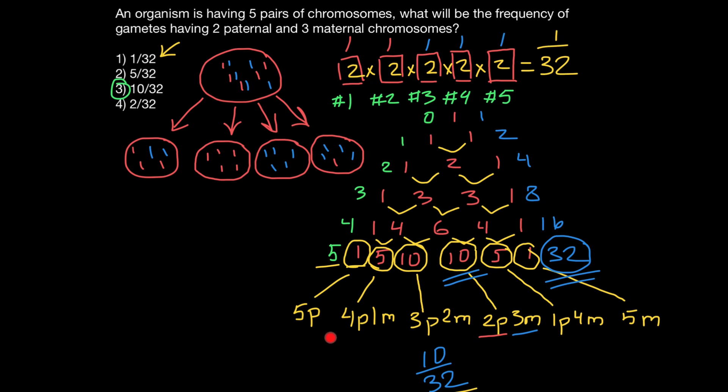Just looking at Pascal's triangle, it is very easy to answer a number of different questions. For example, what is the probability of having four paternally inherited chromosomes and one maternal? The answer is 5 out of 32. What is the probability that all chromosomes are maternally inherited? The answer is 1 out of 32.